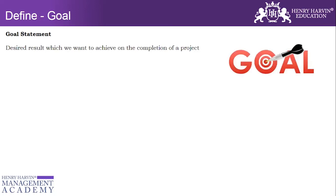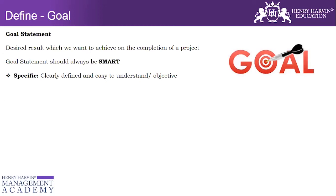Now we are going to talk about the goal statement, which is a very important part of the project charter in the Define phase. As the name suggests, a goal statement is a desired result which we want to achieve on the completion of a project. When preparing a business case or a project charter, it is not only about mentioning the problem and its impact — it is very important to mention where we want to reach. When we say where we want to reach, we talk about a SMART approach, which should be a part of every goal statement.